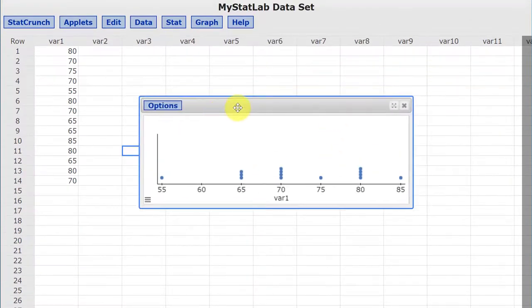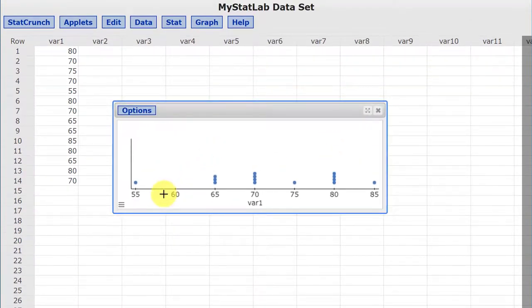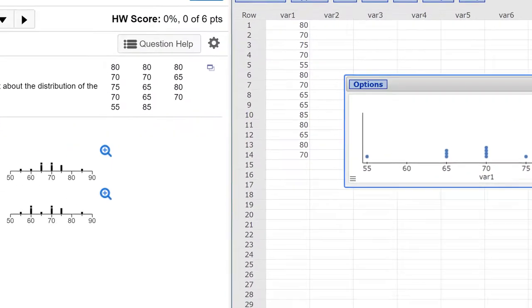And so we get our dot plot. And if you look closely, you can see you've got a dot for each data point. So there's one at 55, three at 65, four at 70, and so on.